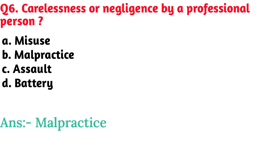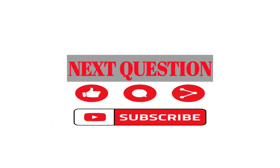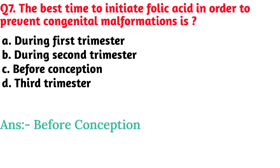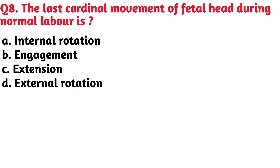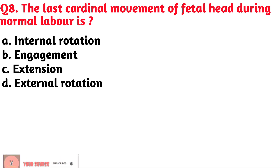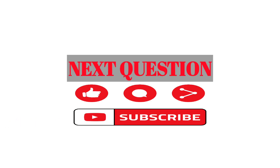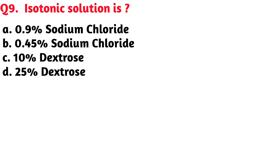The best time to initiate folic acid in order to prevent congenital malformations is — Option C, before conception, is the correct answer. The last cardinal movement of the fetal head during normal labor is — Option D, external rotation, is the correct answer. Isotonic solution is — Option A, 0.9% sodium chloride, is the correct answer.